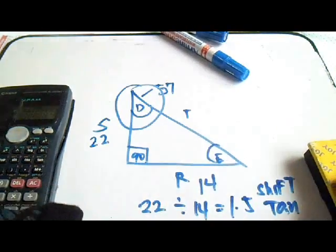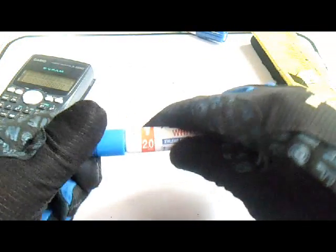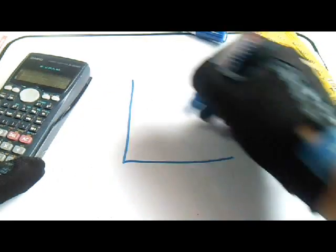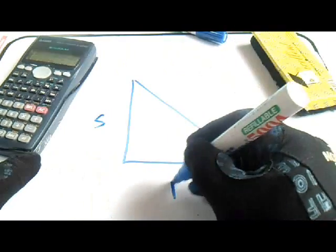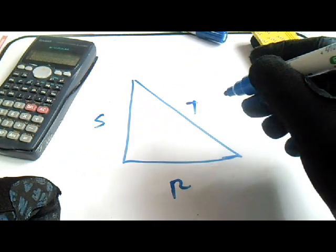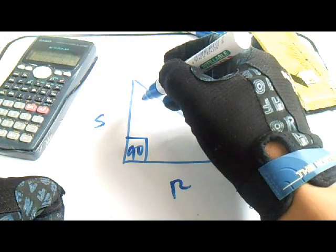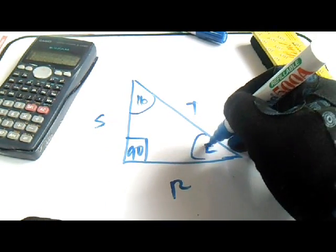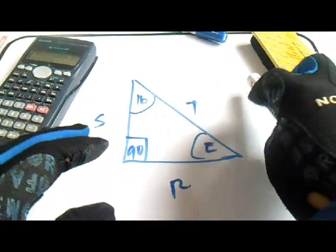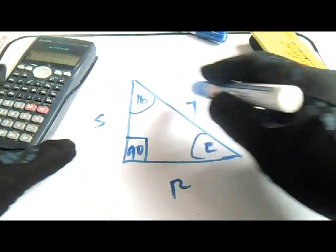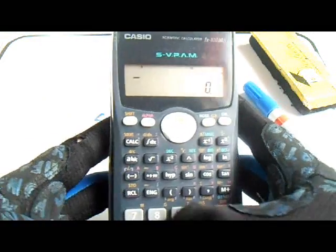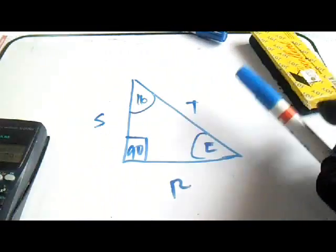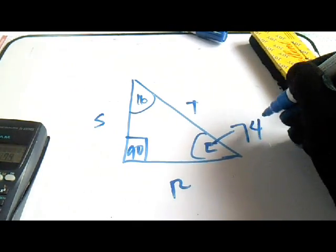Let's try another given. We have set, run, and travel, with 90 degrees here and an angle of 16 degrees given. How to find angle E? As I said, just subtract from 90 degrees. So 90 minus 16 degrees — our answer for E is 74 degrees.